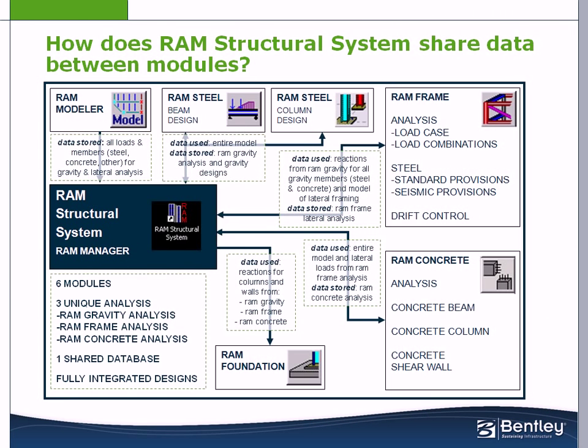In the RAM Structural System, we have six unique modules and three unique analyses which are specialized to capture the issues that are significant to the particular material and types of members being analyzed in design. All of the modules of the RAM Structural System are fully integrated by sharing information to produce a complete building design.